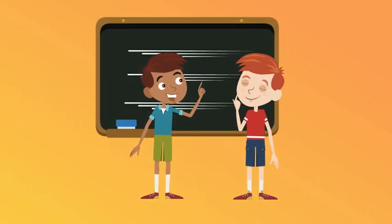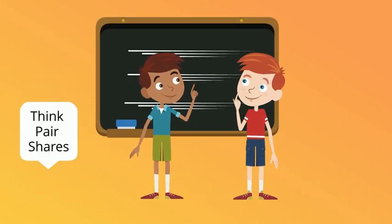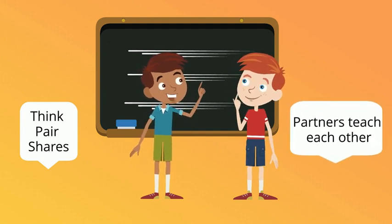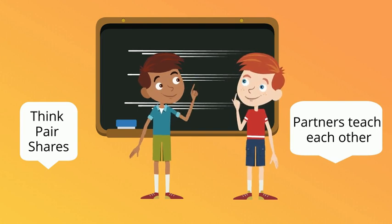In small groups, active learning could look like students doing think-pair shares or having partners teach one another. Activities like these work best when you frame mistakes and challenges as learning opportunities.